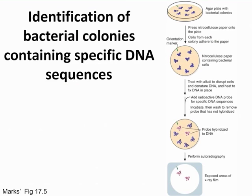There are several methods to detect DNA sequences that we've been cloning. One is pouring bacterial colonies on an agar plate containing nitrocellulose paper, which allows colonies to adhere. We treat it with alkali to disrupt and denature the DNA, separating the two strands of the double helix. We then heat-fix the DNA in place and hybridize it with a probe, allowing us to identify which DNA sequences we've cloned.